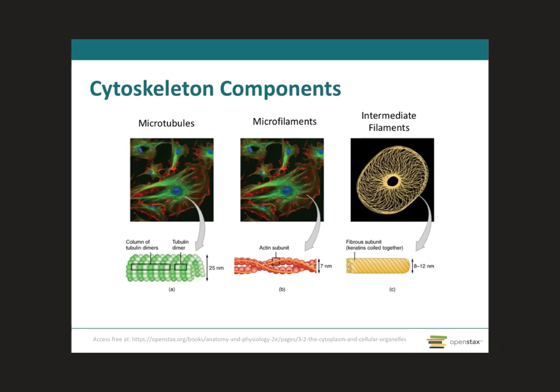Before we get started into the different types of cell junctions, it's important to talk about the different components of the cytoskeleton, mainly because I don't cover the cell chapter. The cytoskeleton forms a complex thread-like network throughout the cell, consisting of three different kinds of protein-based filaments: microtubules, microfilaments, and intermediate filaments.